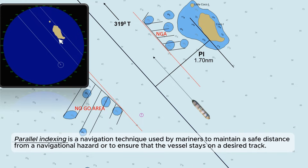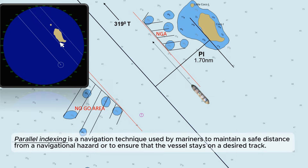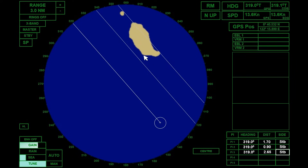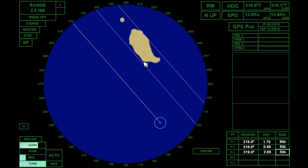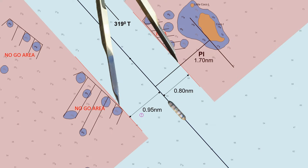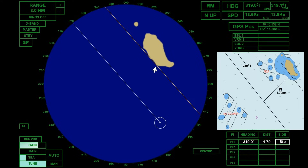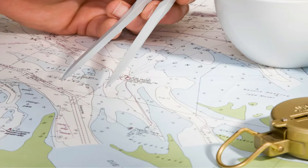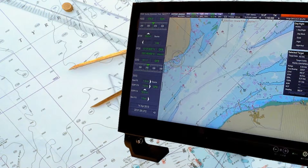Parallel indexing is a navigation technique used by mariners to maintain a safe distance from a navigational hazard or to ensure that the vessel stays on a desired track. This method involves using radar and electronic navigational charts or paper charts to create reference lines parallel to the ship's course to continuously monitor a vessel's track to a predetermined passage plan. Parallel indexing, commonly known as PI, should be determined during the passage planning stage, whether using an electronic navigational chart or a paper chart.